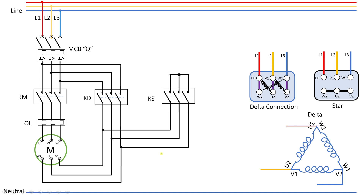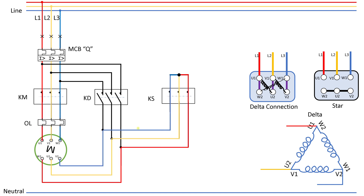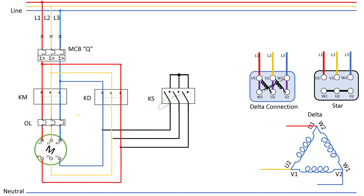Let's see it in action. I'll run the circuit — it will run in star for some time and then shift to delta. I close the MCB, then close the main contactor and star contactor at the same time. The motor is now running in star. After some time, the star contactor opens and the motor is running in delta, where it will continue running until we switch it off.